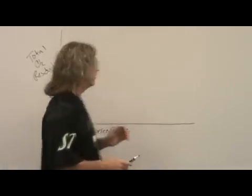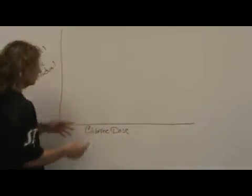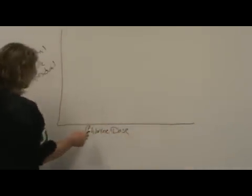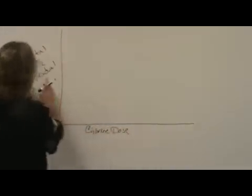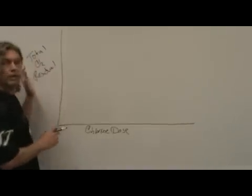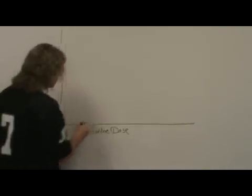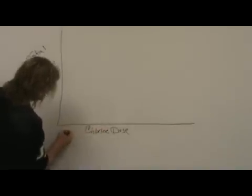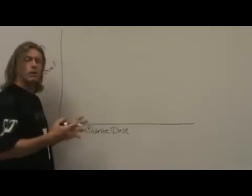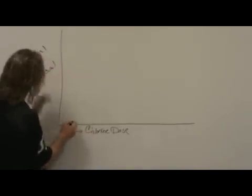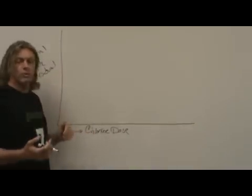So let's start by talking about that. Here we have our graph or chart, or whatever you want to call it. At the bottom we have our chlorine dose. This is the amount of chlorine that we're applying to the water. Over on this side we have our total chlorine residual. So you start adding chlorine to water this way. And as you initially start adding chlorine to water, nothing happens. You don't see any chlorine residual at all.